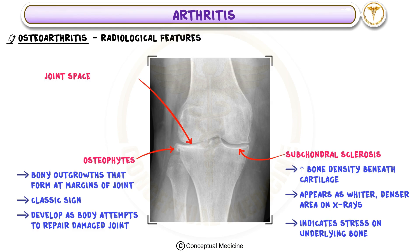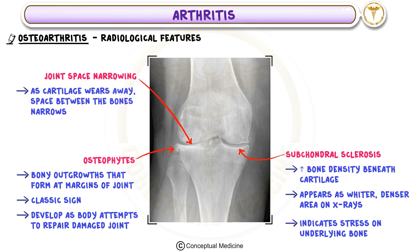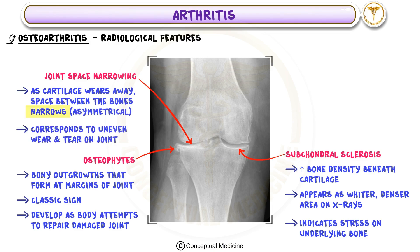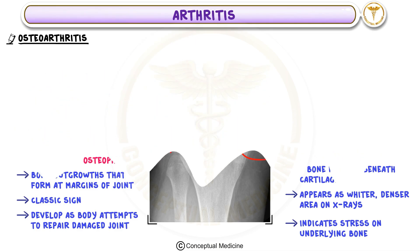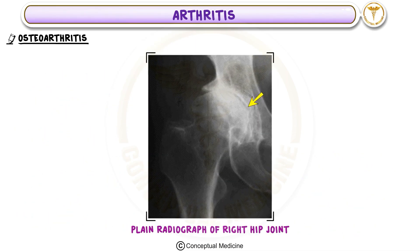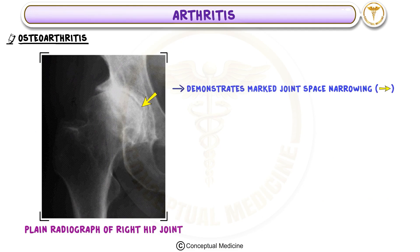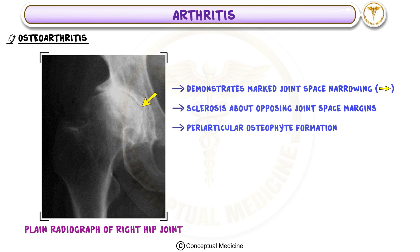Third, joint space narrowing: as cartilage wears away, the space between the bones narrows. In osteoarthritis, this narrowing is typically asymmetrical, corresponding to uneven wear and tear. A plain radiograph of the right hip joint demonstrates marked joint space narrowing, sclerosis about opposing joint space margins, and periarticular osteophyte formation — all characteristic of osteoarthritis.